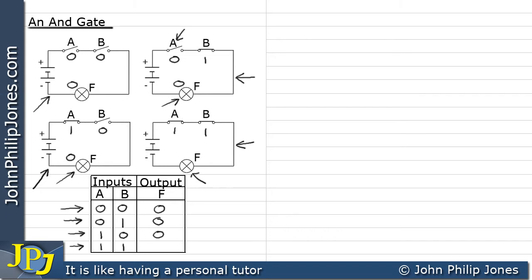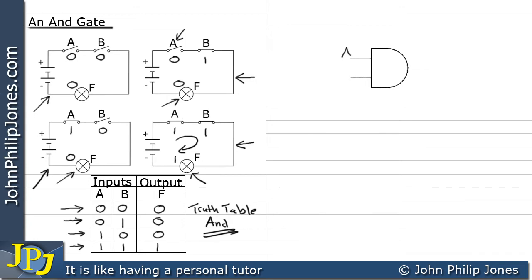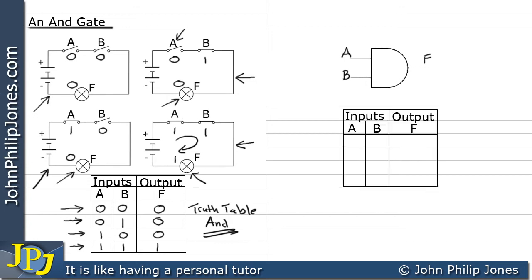If we now look at the actual lamp, current will flow through the circuit. Consequently, the lamp will be on, and we represent that with a one. We now complete the truth table by putting a one in that particular position. This is now the truth table for an AND gate. This is the symbol for an AND gate, and I'm going to label it with input A, input B, and output F.